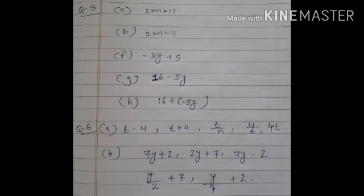Question number 6: form expressions using T and 4. Use not more than one number operation. Every expression must have T in it. यहाँ पे हमें condition fulfill करनी है — expression में T and 4 का ही use करना है, एक से ज्यादा operation use नहीं करने हैं, and हर expression में T होना ही चाहिए. तो यहाँ पे मैंने लिखाए: T minus 4, T plus 4, T divide 4, 4T. आप कुछ भी कर सकते हो — सिर्फ यह condition fulfill करनी है.